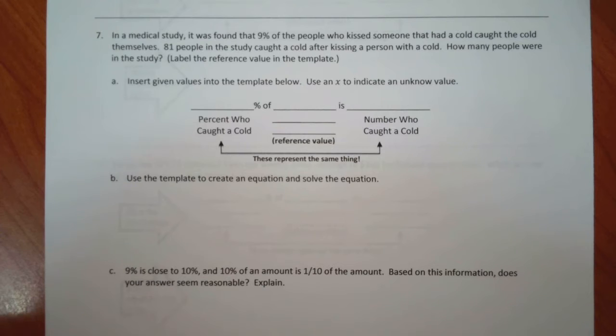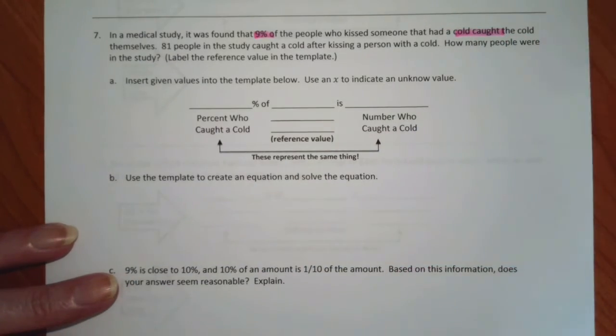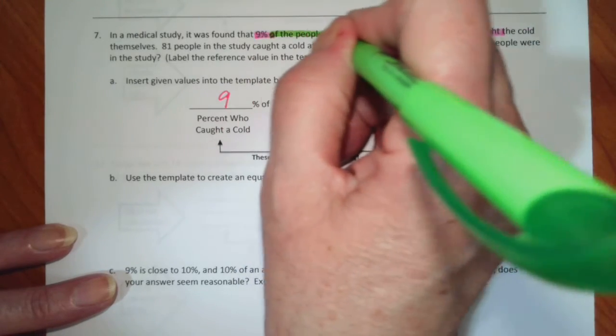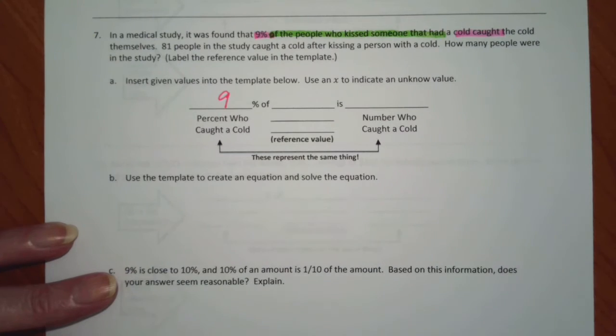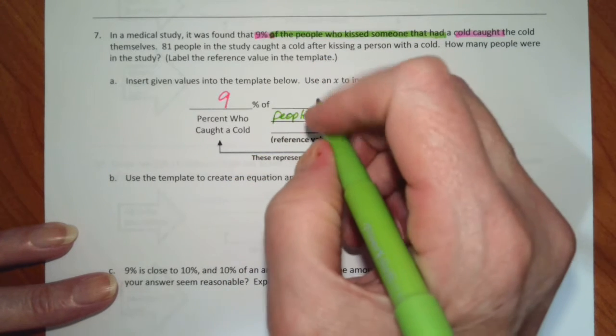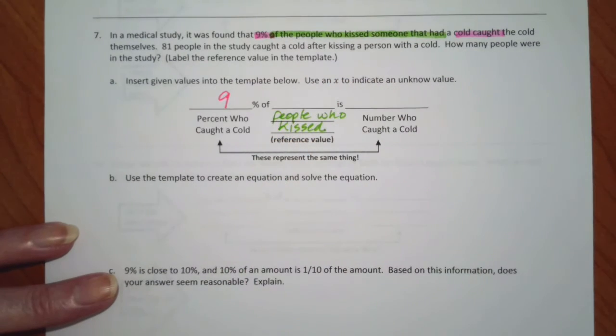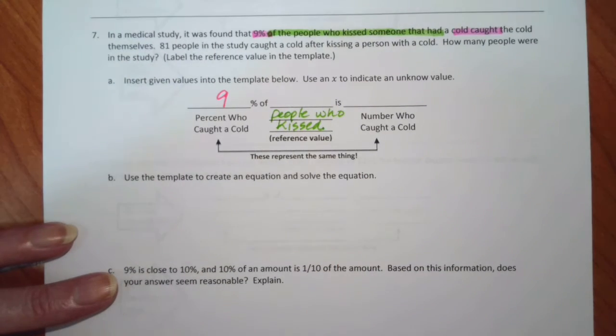In a medical study, it was found that 9% of people who kissed someone that had a cold caught the cold themselves. So we've got a percent here. I know that is 9% caught cold, so that's going to be 9%. Now, of the people who kissed someone with a cold, that is going to be the people who kissed. And then, this is going to be the number that caught cold.